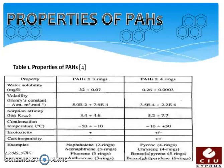PAH properties differ for compounds with greater than three rings versus less than three rings, including water solubility, volatility, soaring affinity, condensation temperature, ecotoxicity, and carcinogenicity. Examples include: naphthalene (two rings), acenaphthene (three rings), fluorene (three rings), anthracene (three rings), pyrene (four rings), chrysene (four rings), benzo[a]pyrene (five rings), and benzoperylene (six rings).